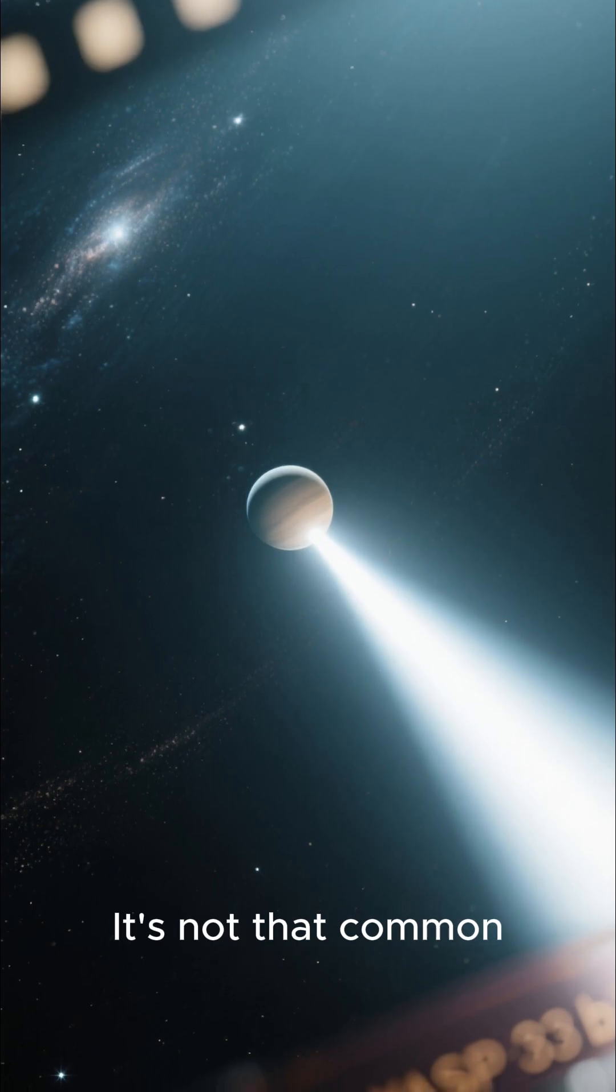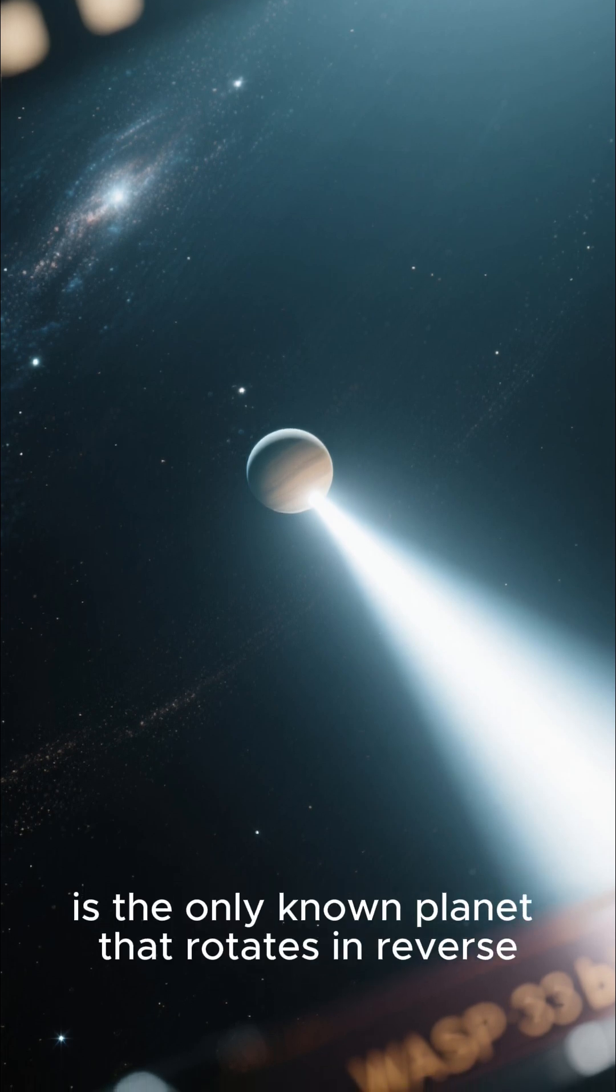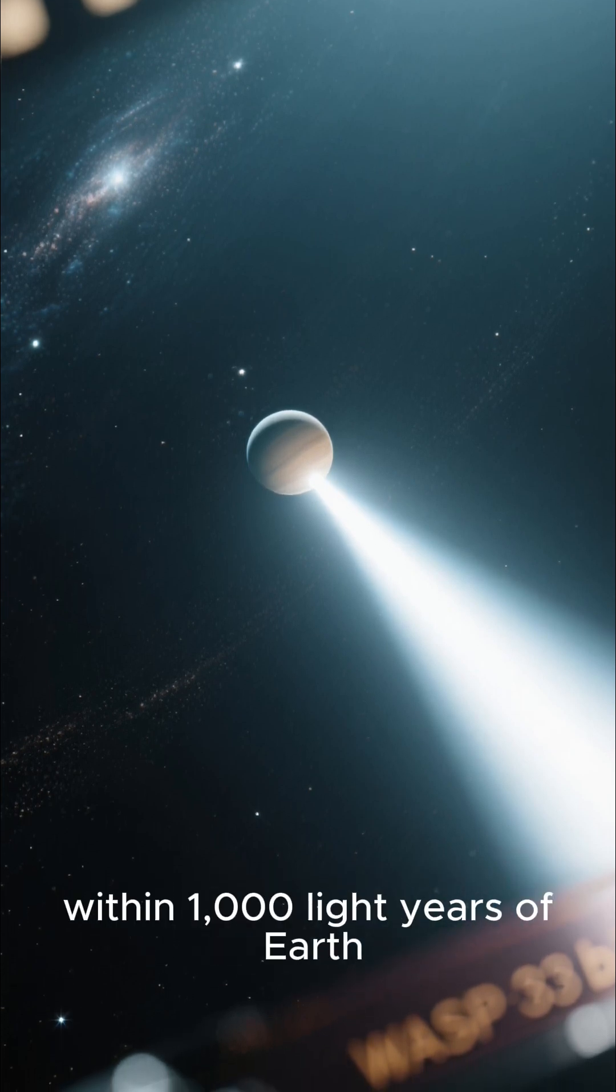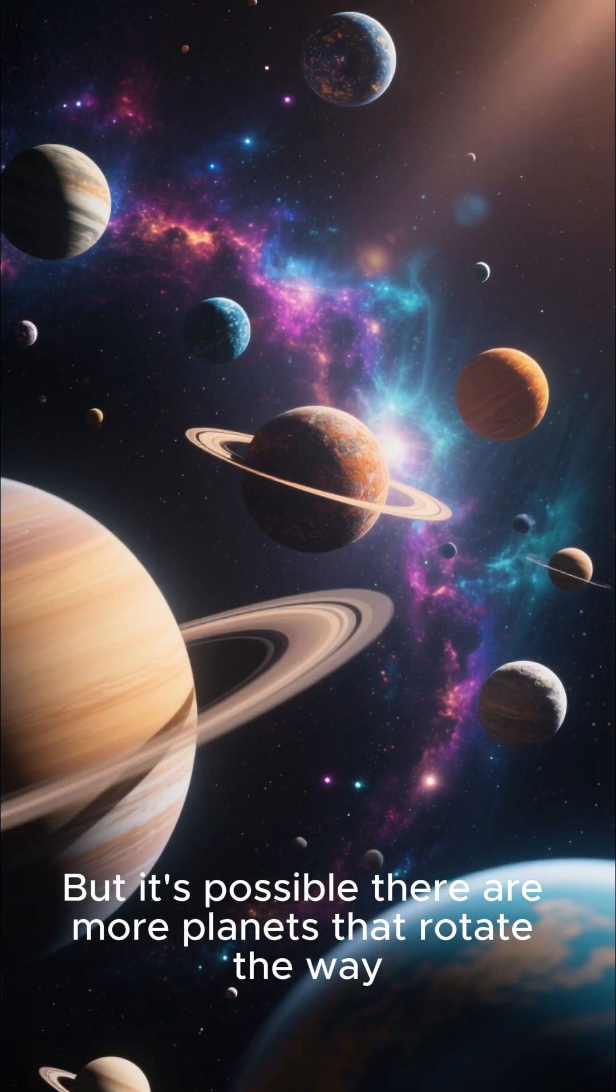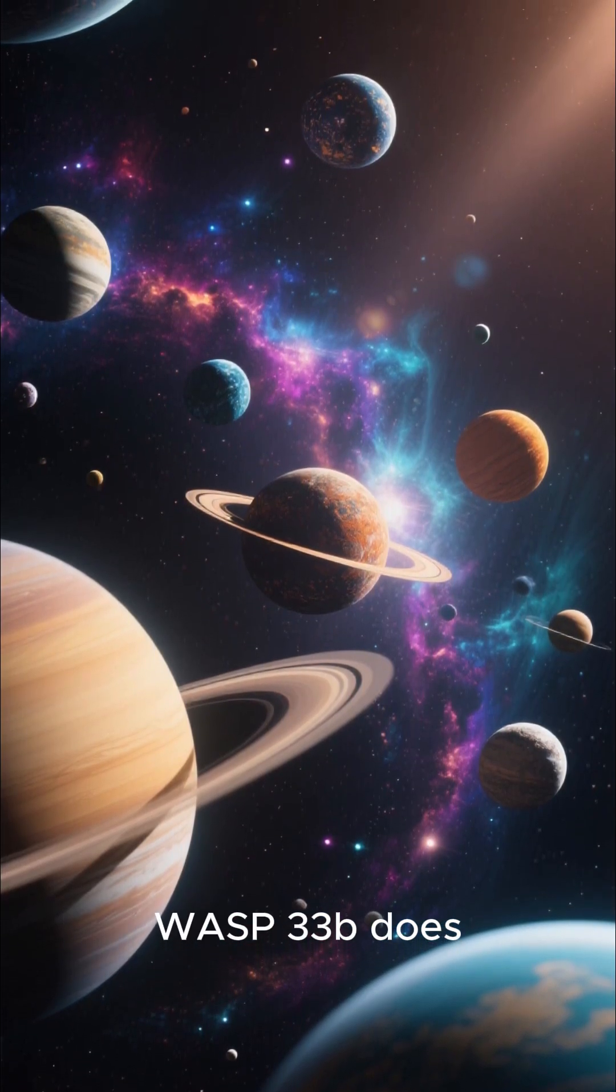It's not that common. In fact, WASP-33b is the only known planet that rotates in reverse within 1,000 light years of Earth, but it's possible there are more planets that rotate the way WASP-33b does.